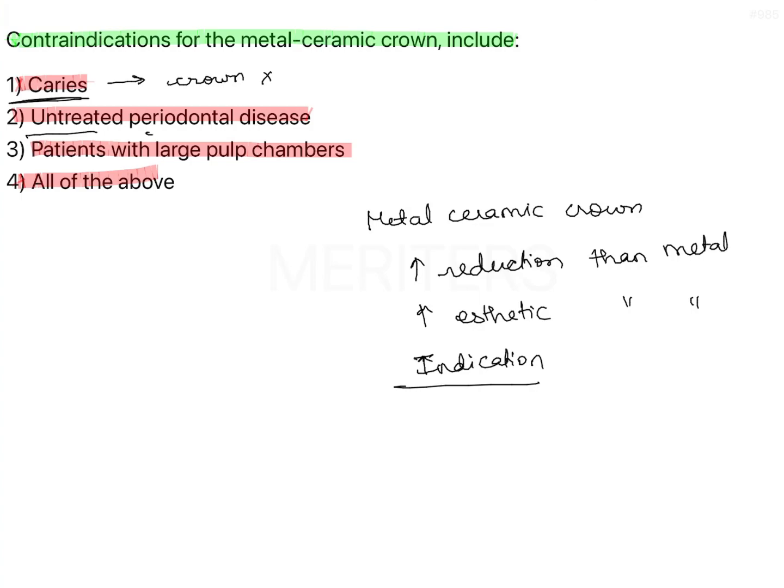Untreated periodontal disease means an unhygienic mouth, or if the patient is not able to maintain hygiene. If the periodontal condition is poor, if the tooth is showing positive bleeding on probing, and if it is mobile, then it is not going to be able to support a restoration — a poor indication for any restoration, forget metal ceramic.